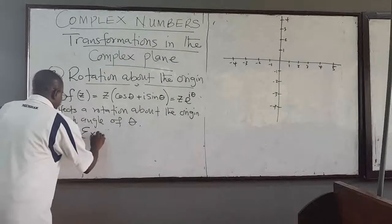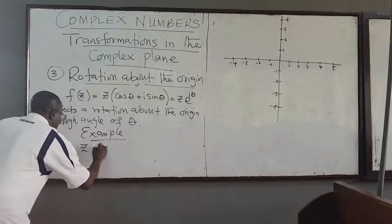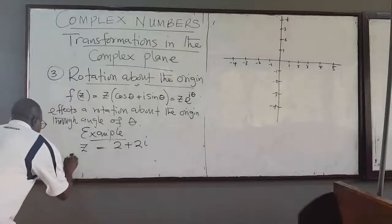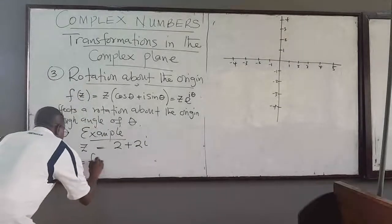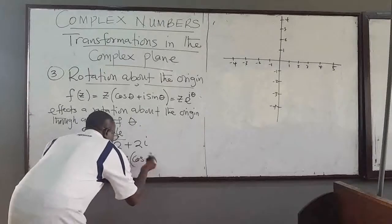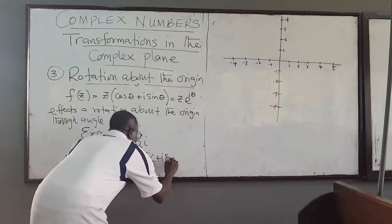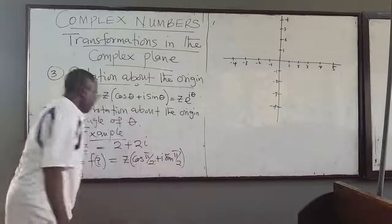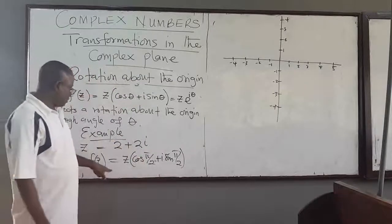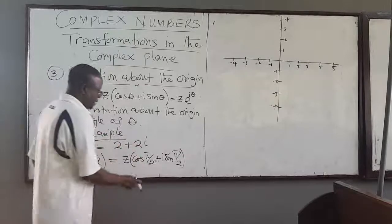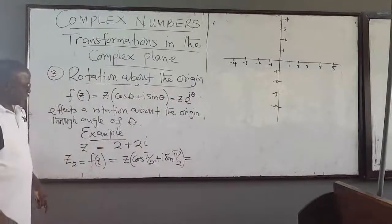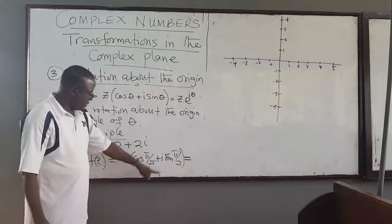For example, if I have a complex number z = 2 + 2i, and a second complex number z2 = f(z), let it equal z multiplied by cos(π/2) + i·sin(π/2), which equals e^(iπ/2). If you multiply your complex number by this, cos(π/2) is 0 and sin(π/2) is 1, so this is basically equal to i times z.